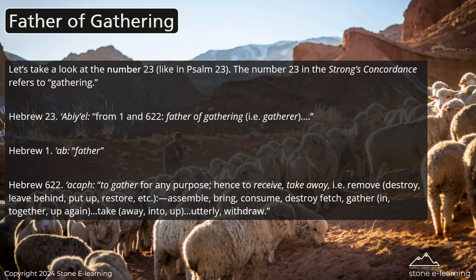Let's take a look at the number 23, like in Psalm 23. The number 23 in the Strong's Concordance refers to gathering. Hebrew 23 — Abiel — from roots 1 and 622, meaning 'Father of Gathering,' i.e., Gatherer. Hebrew 1: Ab — Father. Hebrew 622: Asaf — to gather for any purpose, hence to receive, take away, i.e., remove, destroy, leave behind.